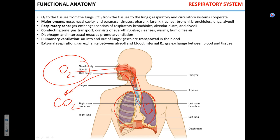The entire respiratory system can be divided into two distinct anatomical parts: the respiratory zone, which is responsible for actual gas exchange, and the conducting zone, which is responsible for gas transport.